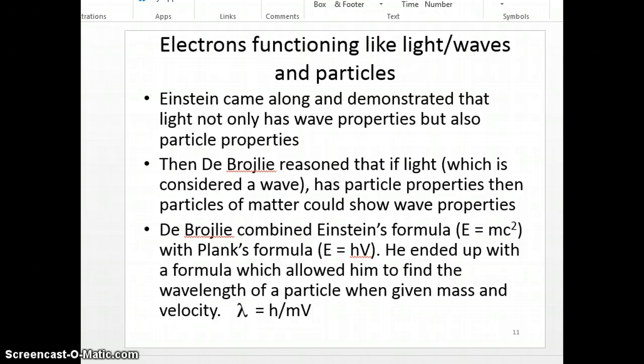With Planck's formula, E equals hν, again we're talking energy of a wave. So he combined the energy from a particle with the energy from the wave. He ended up with a formula which allowed him to find the wavelength of a particle when given mass and velocity. And remember, all particles or objects have mass and velocity. We are not going to use the formula. You just need to recognize that as de Broglie's formula where he combined Einstein's formula and Planck's formula for energy.